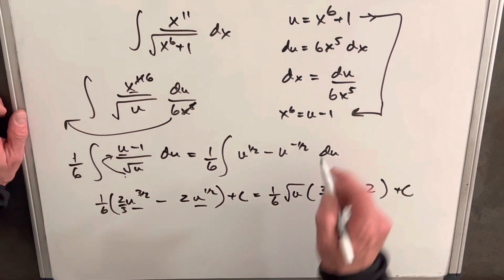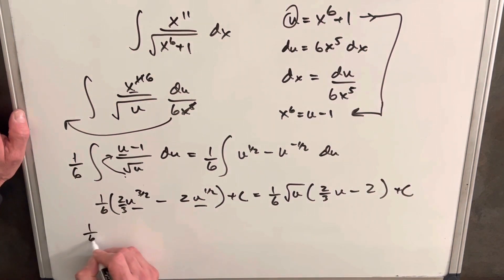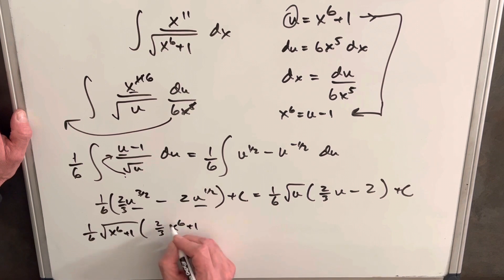Okay, so now I'm ready to back substitute with my u. So we're going to have 1 6th square root of x to the 6th plus 1, 2 3rds u. So we're going to have 2 3rds x to the 6th plus 1 minus 2.